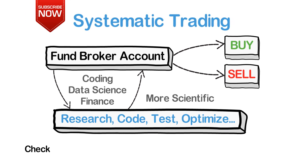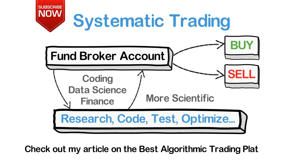All you have to do nowadays is learn the API of an algorithmic trading platform and you're good to go. For a list of some great algorithmic trading platforms, check out my article on the best algorithmic trading platforms. There's a link in the description box below.